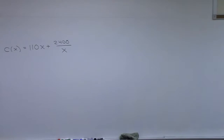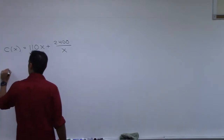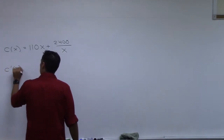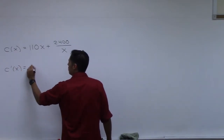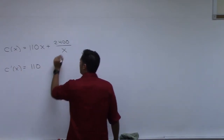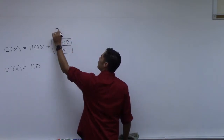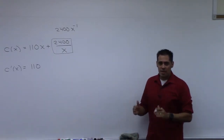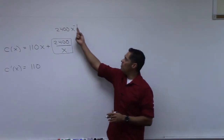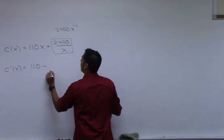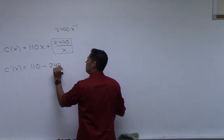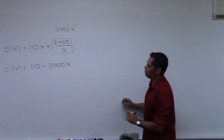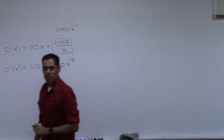So to do this, you had to take the derivative of that, set it equal to zero, and figure out where you might be going down then up. The derivative of 110x is 110. Then you have to rewrite 2400 over x as 2400 times x to the negative one, and use the power rule: the negative one comes out, giving negative 2400 times x to the negative two.